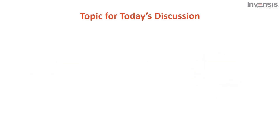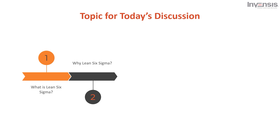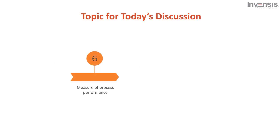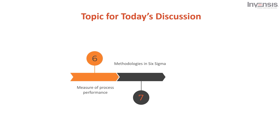We will begin this session by understanding what is Lean Six Sigma. Once you get to know about Lean Six Sigma, we will see why do we need Lean Six Sigma. Then we will get to know what is Lean, what is Six Sigma, and we will discuss the 8 types of Lean wastes. We will also discuss how Six Sigma acts as a measure of process performance, go through the methodologies in Six Sigma with examples, and finally understand the benefits of Lean.